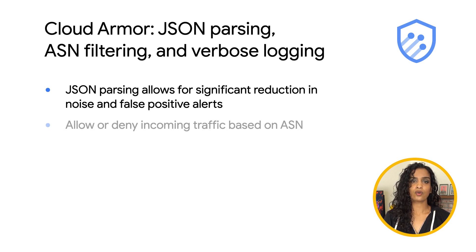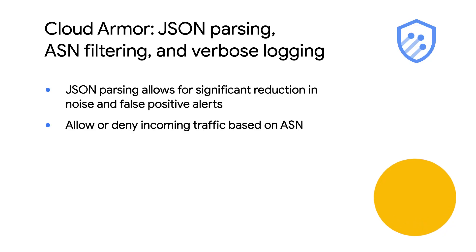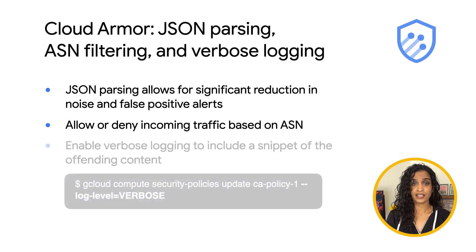Cloud Armor lets you allow or deny incoming requests serviced from a specific network operator, defined by their autonomous system number. Finally, you can get more logging information of incoming requests. By default, event logs contain the security rule that was triggered. With verbose logging, Cloud Armor can generate additional details in the request logs to include a snippet of the offending content that triggered the rule.